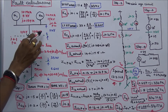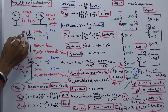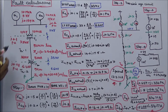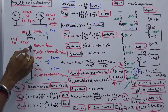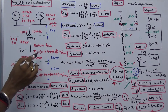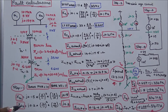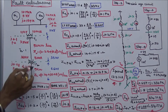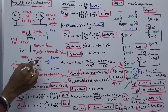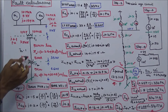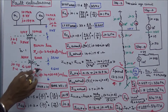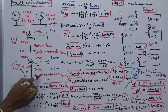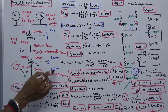Transformer 1 rating is 10 MVA, 11 kV / 33 kV, with reactance j0.1 per unit. Transmission line 1 has a length of 50 km and impedance of 0.28 + j0.35 ohms per km. Transformer 2 rating is 5 MVA, 33 kV / 6.6 kV, with reactance j0.08 per unit. Transmission line 2 has a length of 5 km and impedance of 0.14 + j0.08 ohms per km.